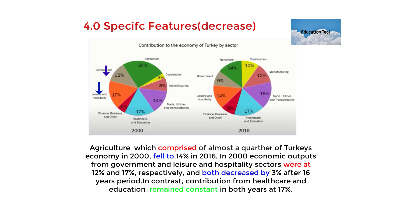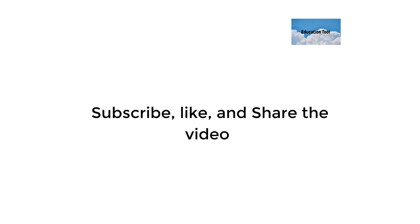To indicate the percentage of different economic sectors, I used diverse expressions such as 'comprised' and 'were at.' To describe a change in percentage, I used expressions such as 'fell to,' 'both decreased by,' and for no change in percentage I used 'remained constant.'